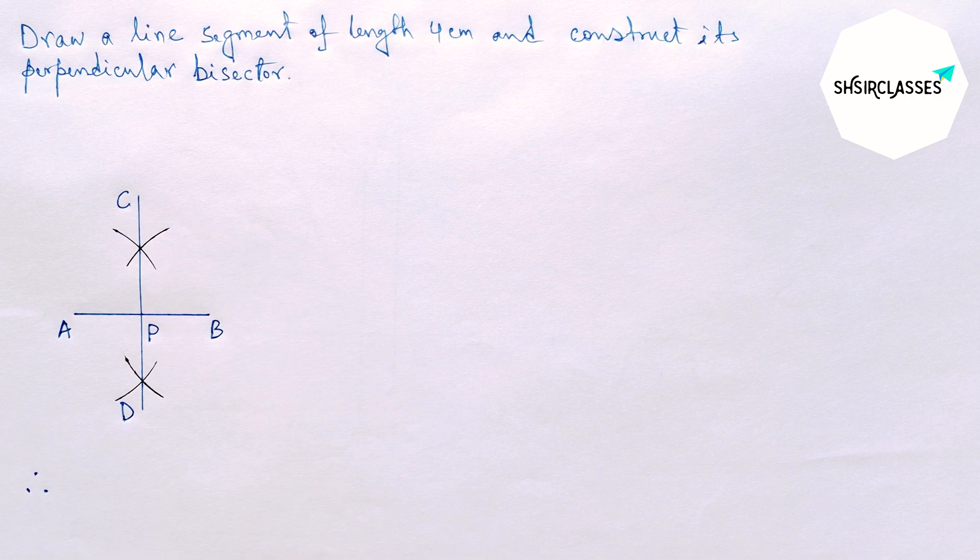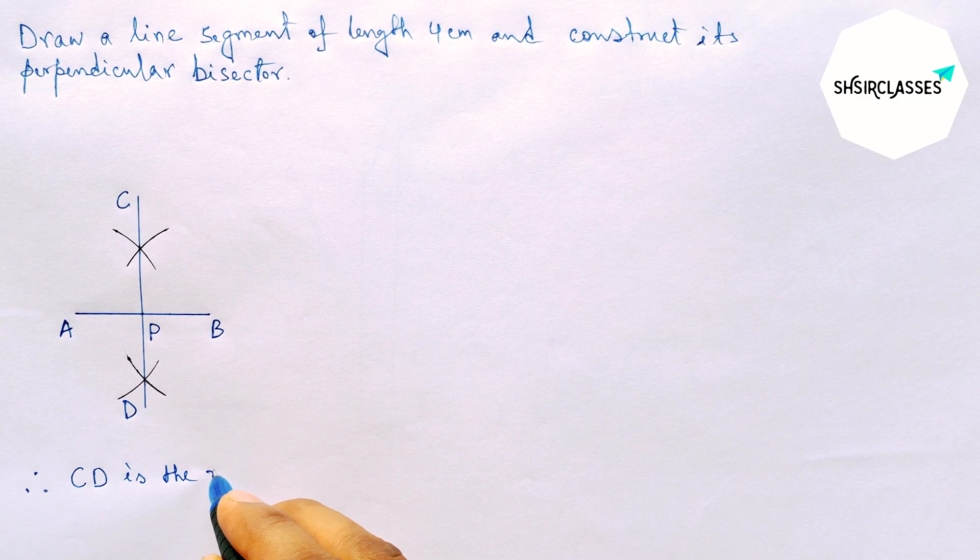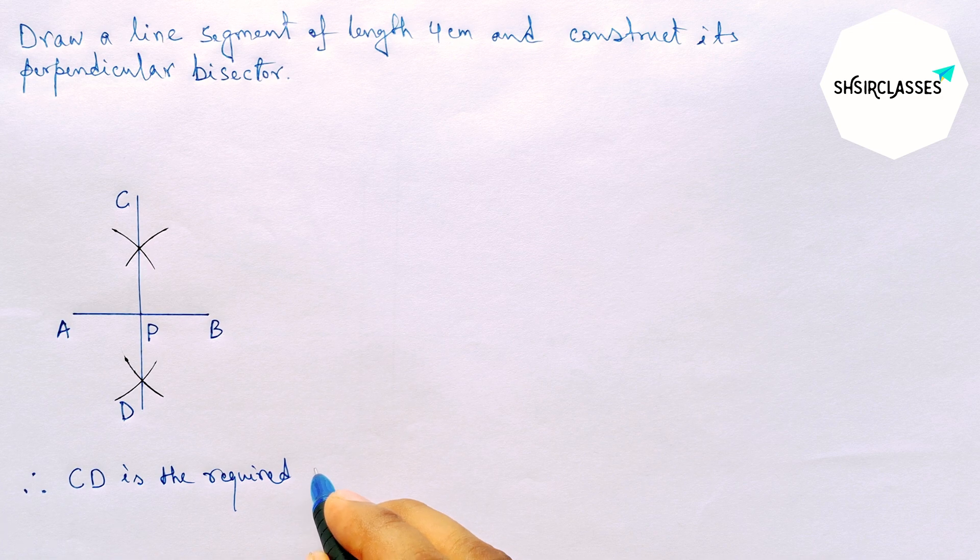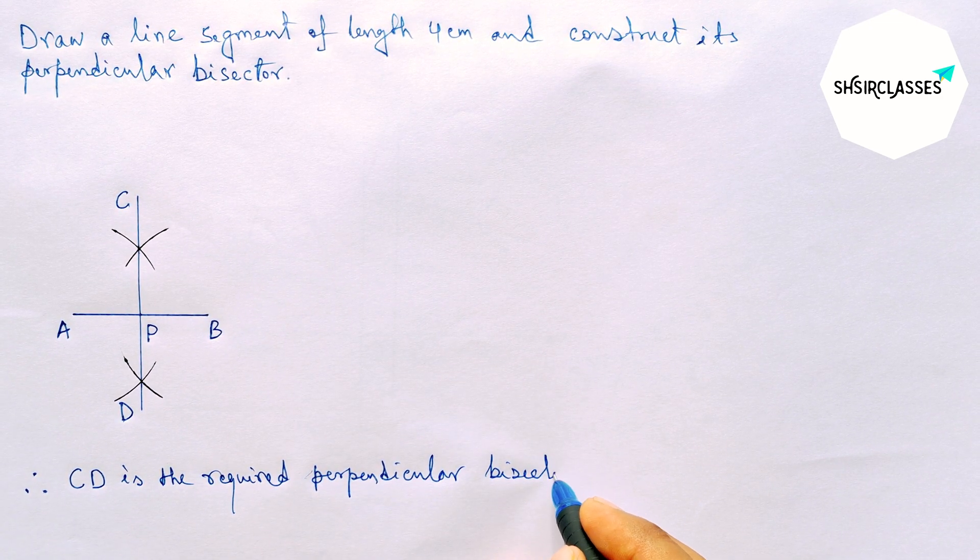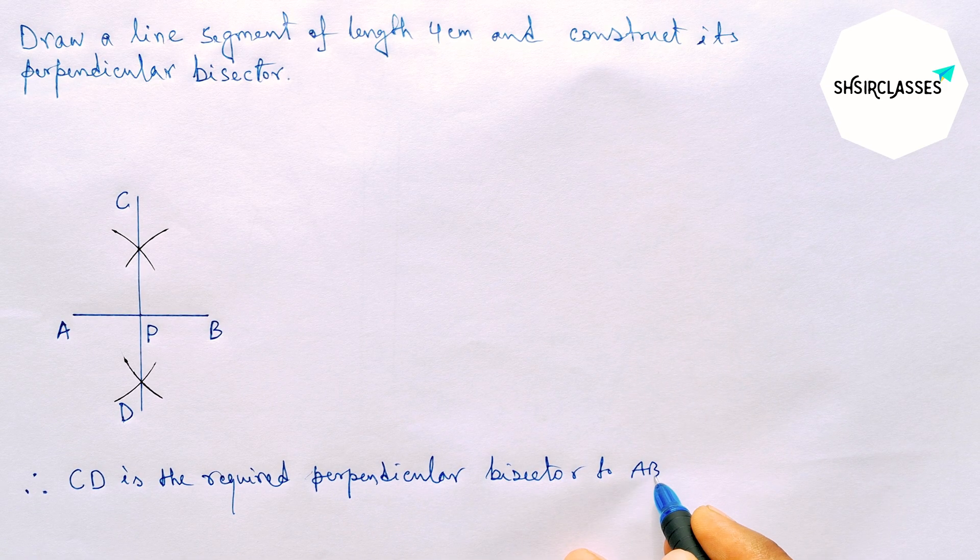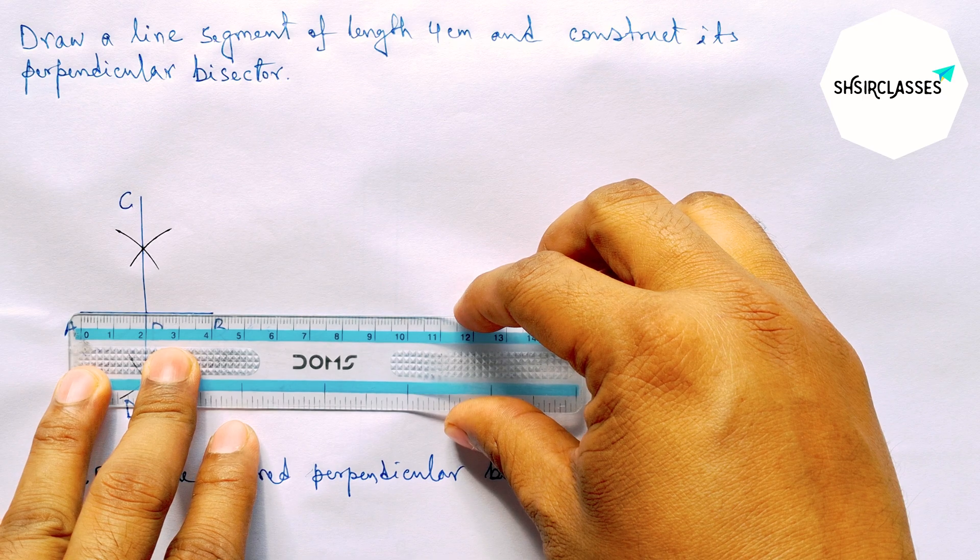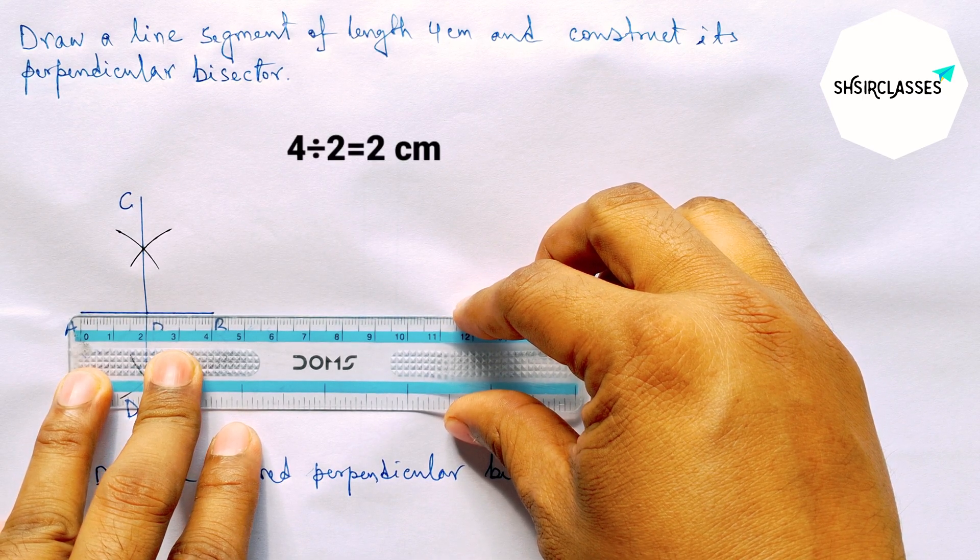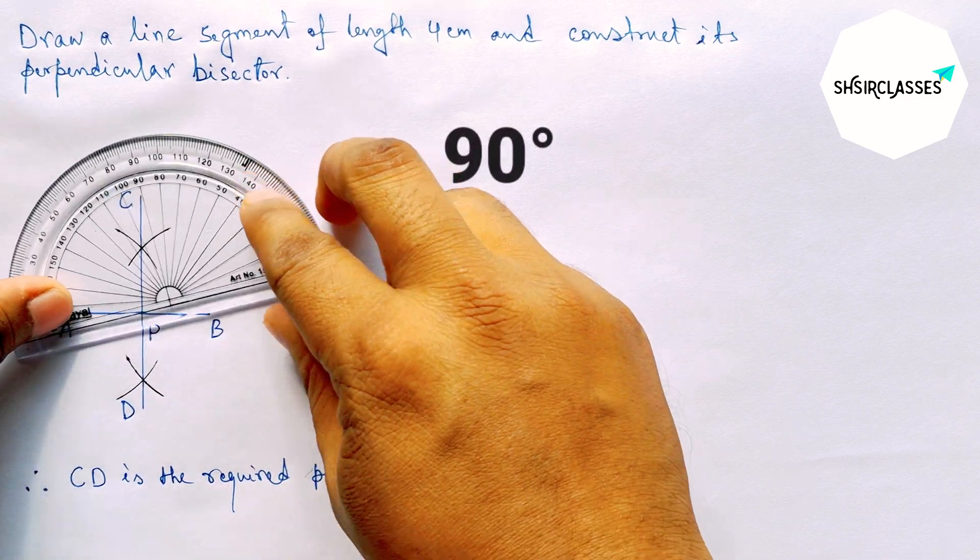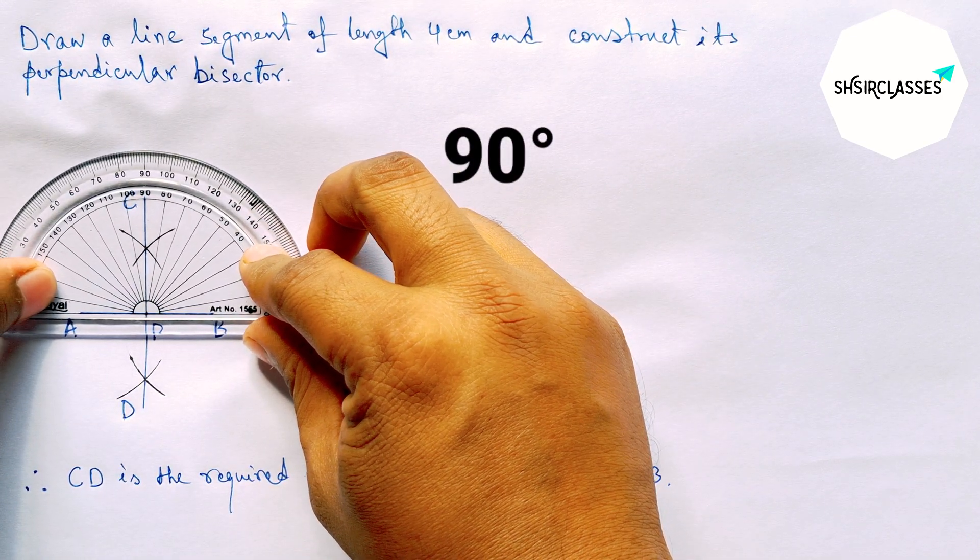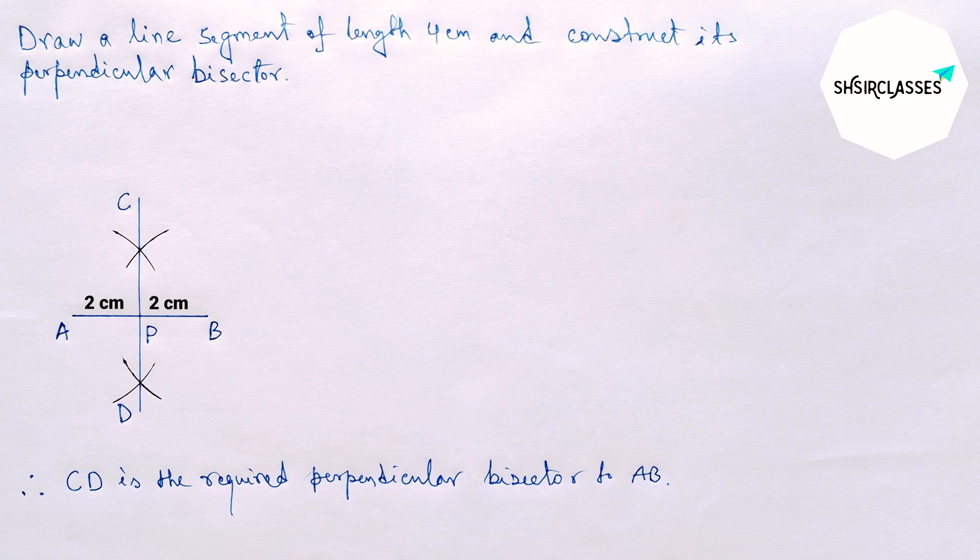Therefore, here CD is the required perpendicular bisector to the line segment AB. And by this way you can construct a perpendicular bisector. Now let us check whether it bisects perfectly or not. This perfectly bisects the line AB and this is also 90 degrees, that means perpendicular. So that's all.